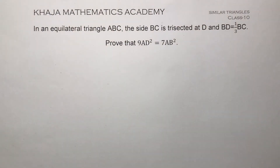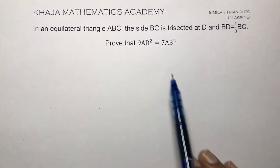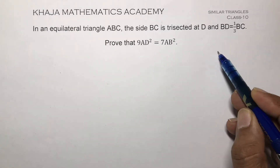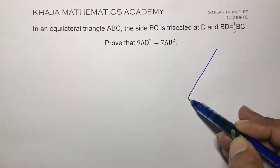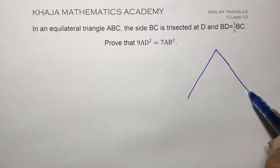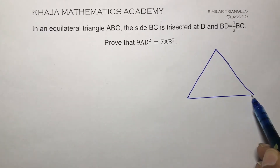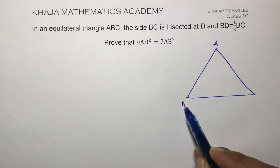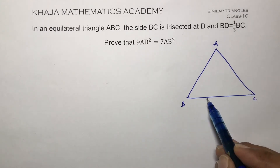In an equilateral triangle ABC, the side BC is trisected at D and BD equals 1/3 of BC. We need to prove that 9AD² equals 7AB². It is an equilateral triangle ABC and D is a point on BC.